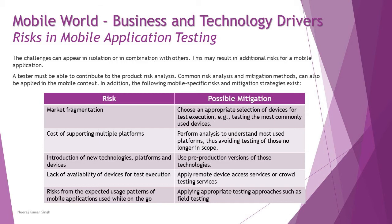The third risk is the introduction of new technologies, platforms, and devices. The mitigation here is to use pre-production versions of those technologies, which can help you test them before they reach the live market. You have the possibility to use specific versions available right before they are released and target them during your testing cycles to cover them as well.